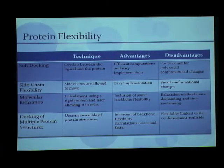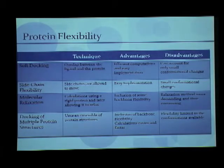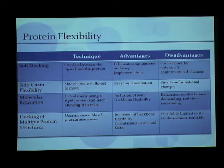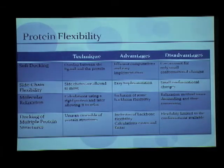I'll go through the different protein flexibility methods developed so far. Initially they started with soft docking, which is a very easy and efficient way of including flexibility where they allow a certain overlap between the ligand and protein. After that, people started to include sidechain flexibility where the sidechains were allowed to move somewhat. Both of these methods are computationally efficient and easy to implement, but the main disadvantage is that they can account only for small conformational changes and backbone flexibility is not included.